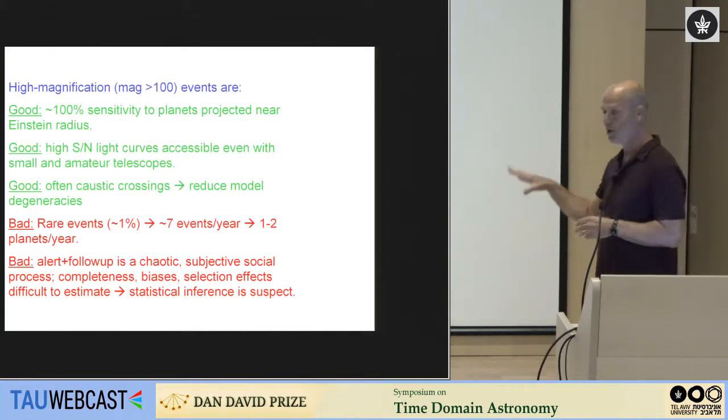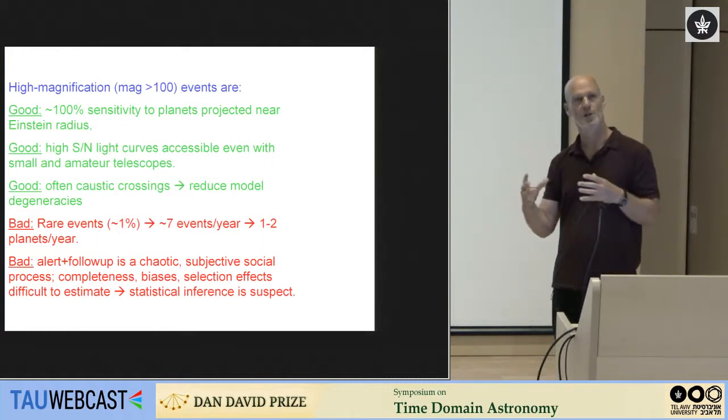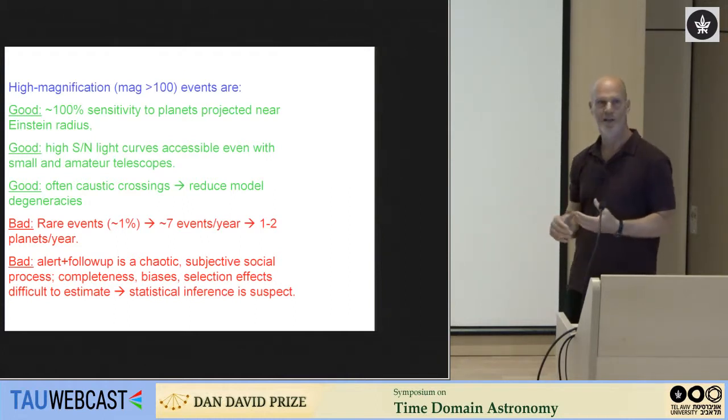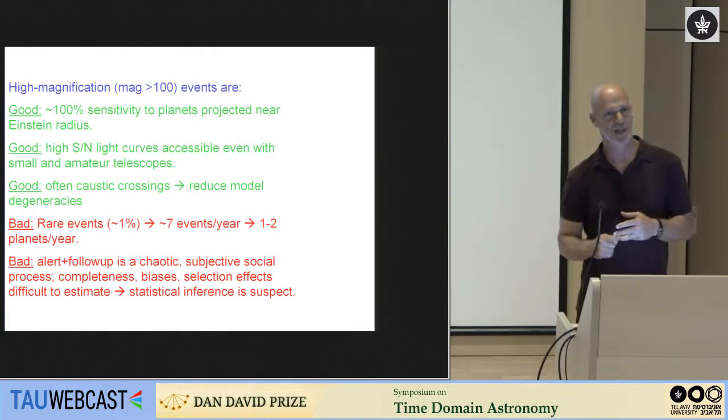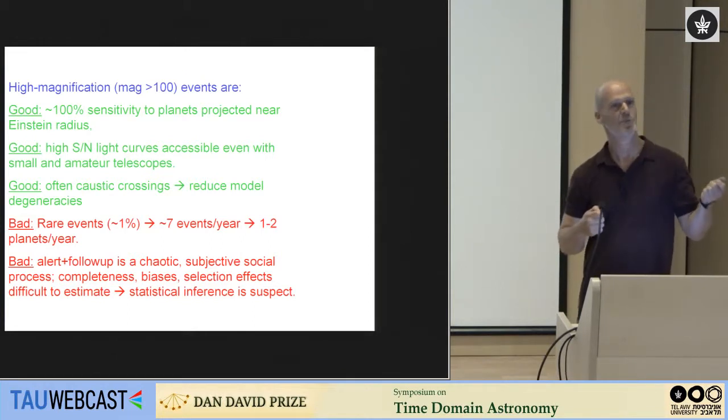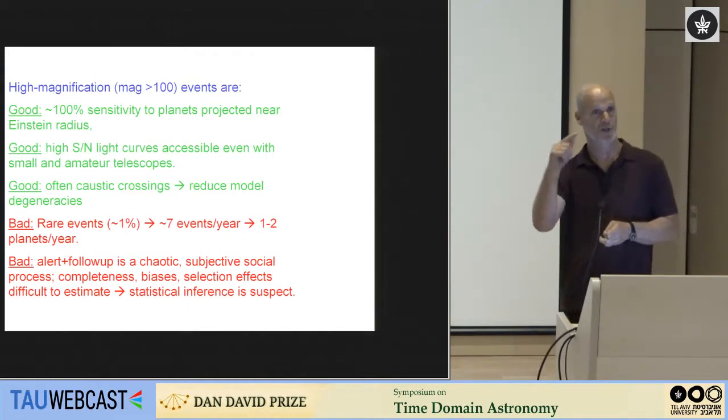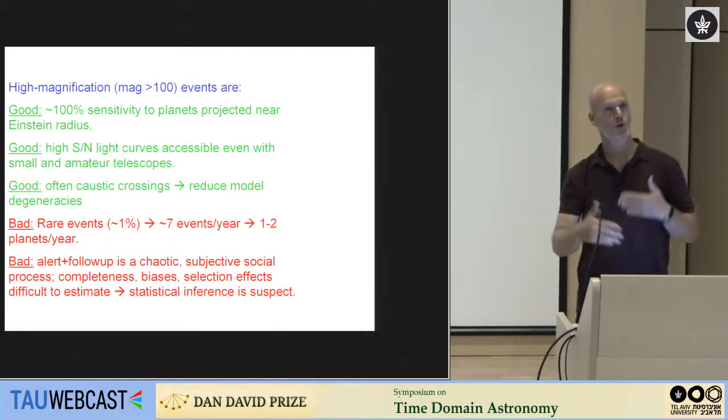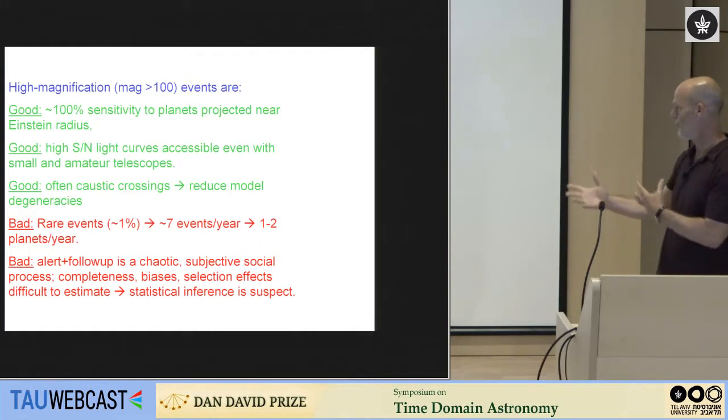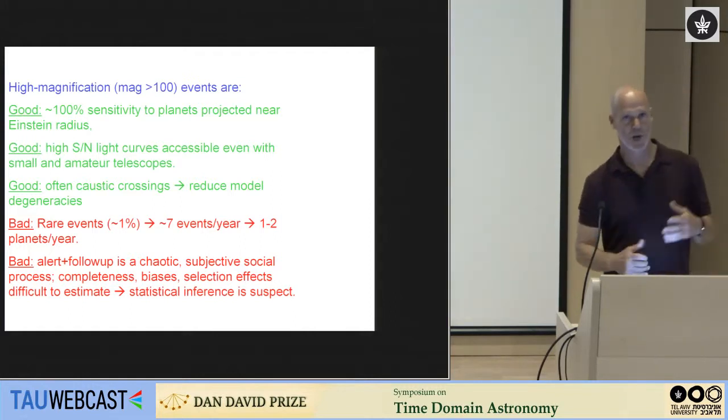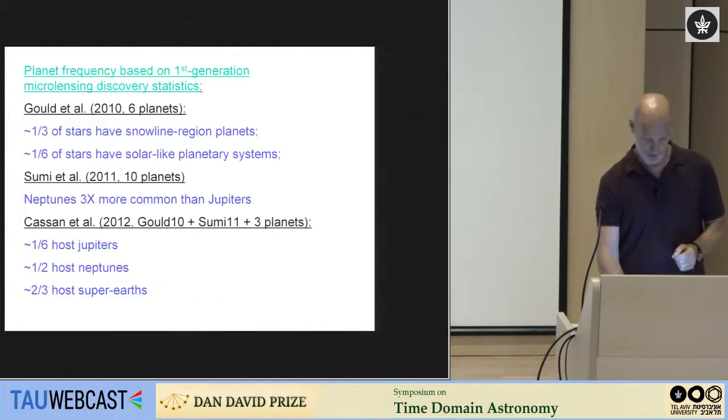And that means that if you have a planet anywhere along, remember that first animation I showed with the image passing near the planet and getting split? If your image is split into a whole Einstein ring, then it doesn't matter. Anywhere you put the planet, it will perturb that ring and you'll see a lensing anomaly. So these events have very high sensitivity to planets projected anywhere near the Einstein ring. If there's a planet there and you have a high magnification event, you'll see it. It's almost 100% sensitivity.